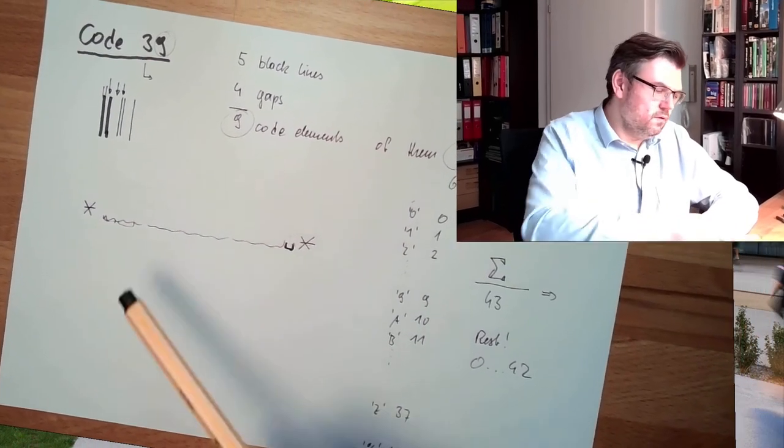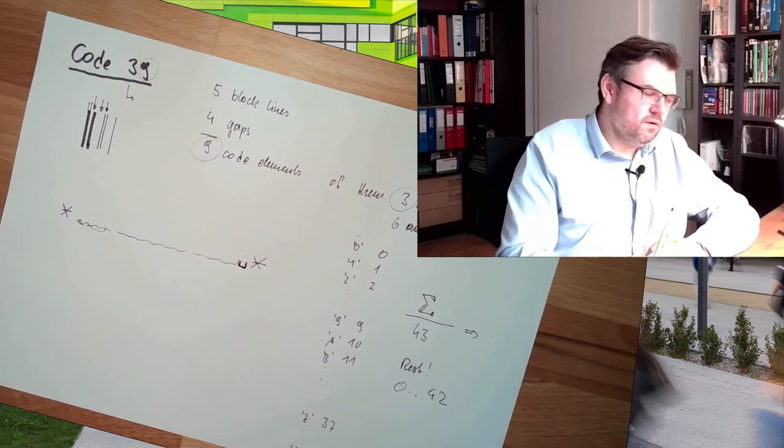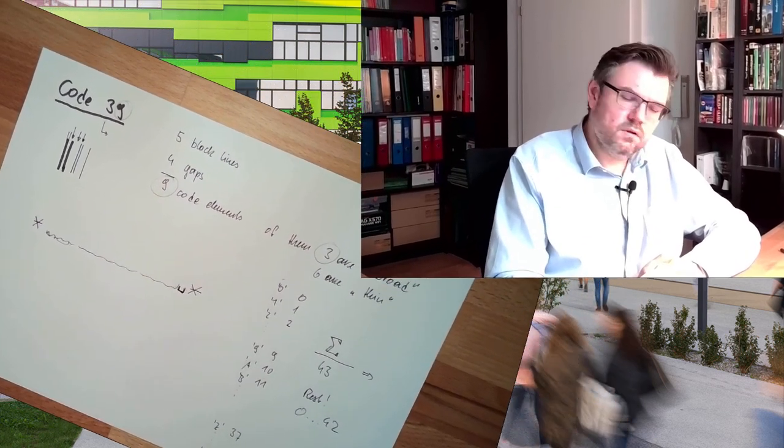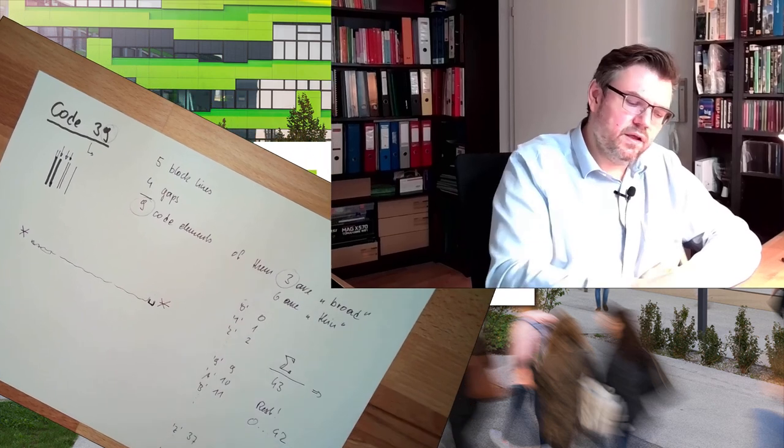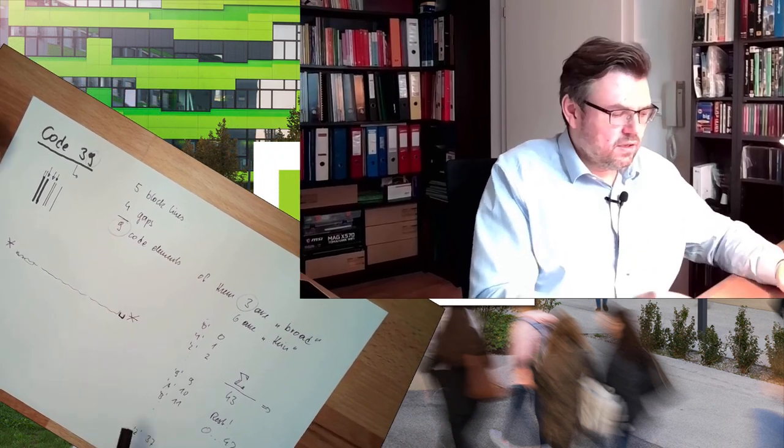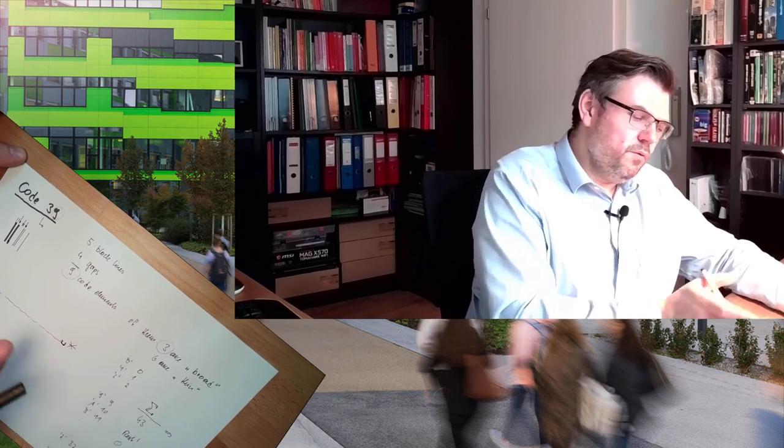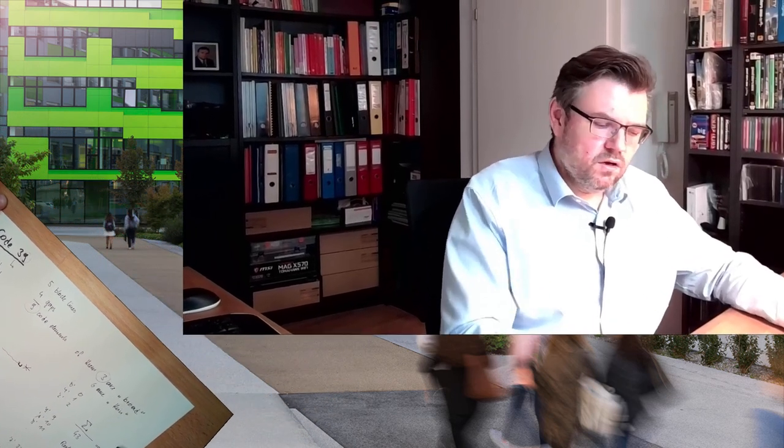Code 39 - this is how this is working. Two widths, nine elements, five lines, four gaps, only three of them broad. Different combinations means different letters. Start and stop sign is always the letter star, so we can distinguish if we're reading backwards or forwards, and we can even include an error checking system.